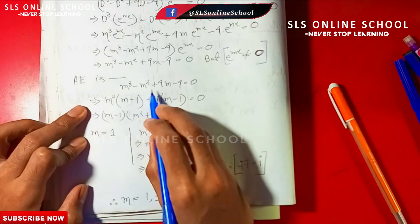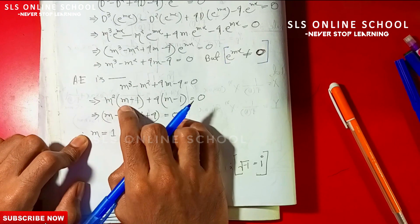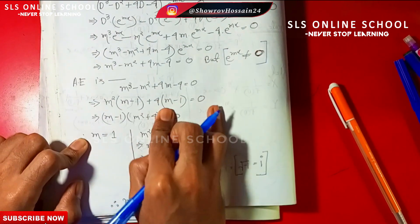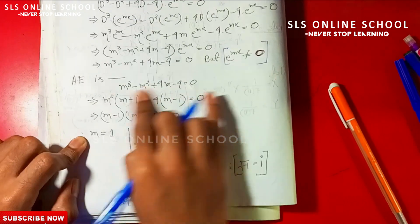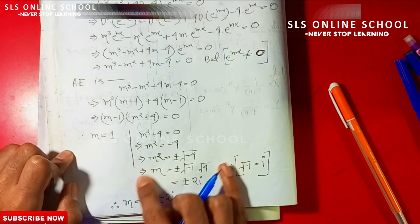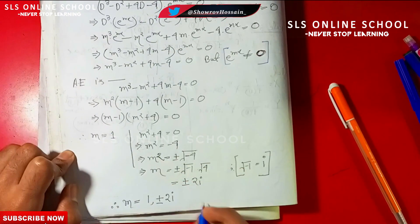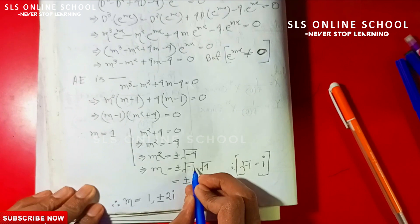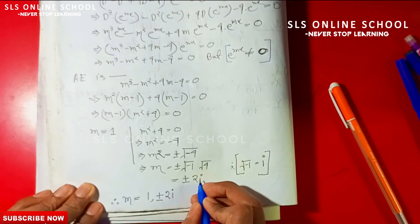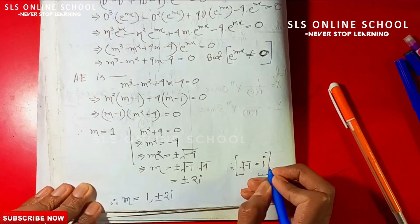The auxiliary equation is m-cube minus m-square plus 4m minus 4 equal to zero. Solving by grouping: taking m-square common from the first two terms and 4 common from the last two gives (m minus 1)(m-square plus 4) equal to zero. So m equals 1, and m-square equals minus 4, giving m equal to plus or minus root of minus 4, which is plus or minus root of minus 1 times root of 4.